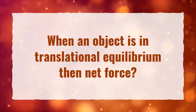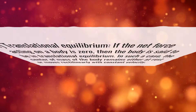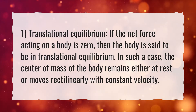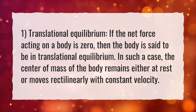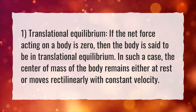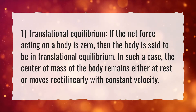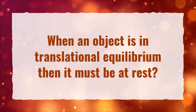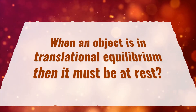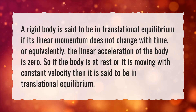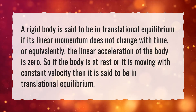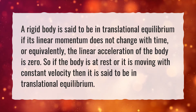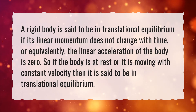When an object is in translational equilibrium, the net force is zero. If the net force acting on a body is zero, then the body is said to be in translational equilibrium. In such a case, the center of mass of the body remains either at rest or moves rectilinearly with constant velocity. A rigid body is said to be in translational equilibrium if its linear momentum does not change with time, or equivalently, the linear acceleration of the body is zero. So if the body is at rest or it is moving with constant velocity, then it is said to be in translational equilibrium.